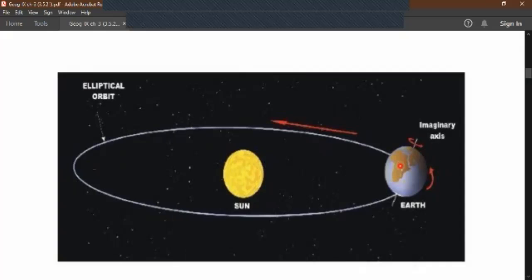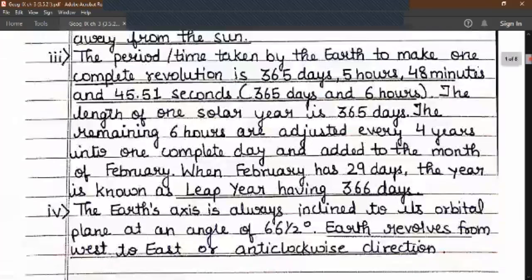The characteristics of revolution are number one: the earth moves in an elliptical orbit at an average speed of 100,000 km per hour. Number two: when the earth is closer to the sun the gravitational pull makes earth move faster than when it is away from the sun. Number three: the period or the time taken by the earth to make one complete revolution is actually 365 days 5 hours 48 minutes and 45.51 seconds which means 365 days and 6 hours.